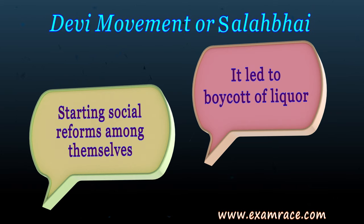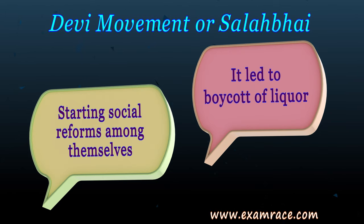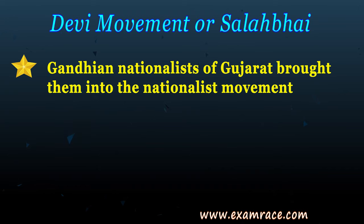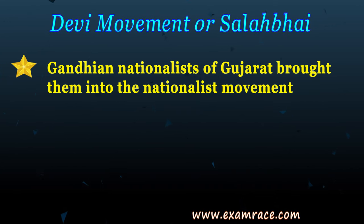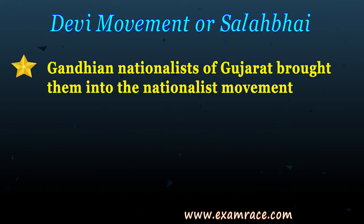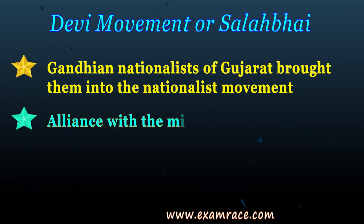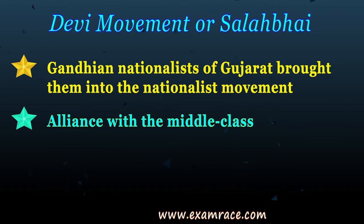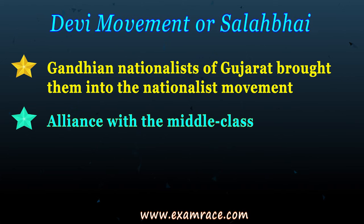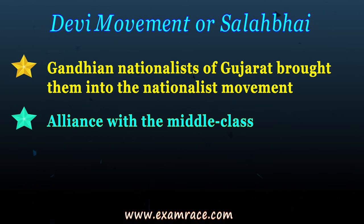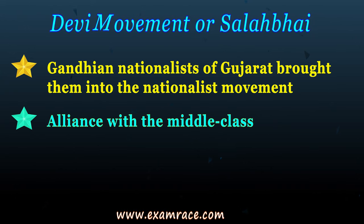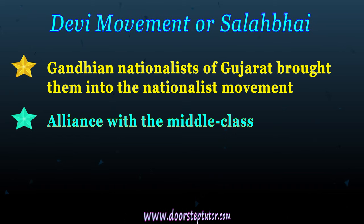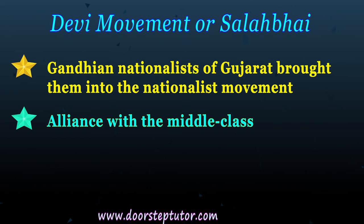Now they could raise their voice. They organized themselves and started social reforms. At the same time, Gandhi was also experimenting with a lot of ideas and movements. This group of tribals made an alliance with the middle class and the Gandhian nationalists of Gujarat, who brought them into the nationalist movement. Something that had started on a very small scale was now on a bigger platform, transforming into a nationalist movement. The illiterate tribal people who had no voice were now heard and were part of a bigger revolution.